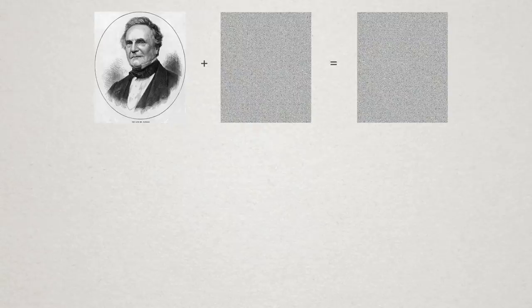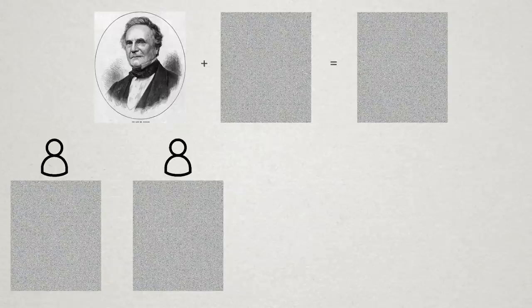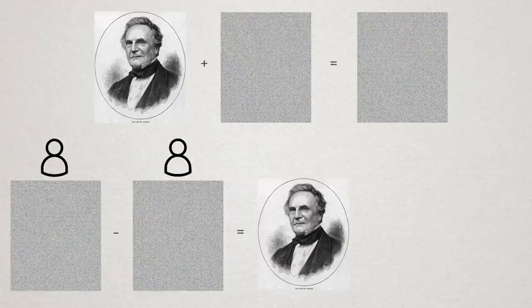Then one person could take the random image, the other could take the scrambled image. And when they need to recover the original image, they just subtract the random image from the scrambled image. In this case, the secret shares on their own contain no information about the original image, but together they recover it perfectly.